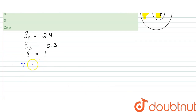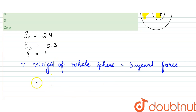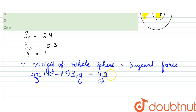Since the whole sphere is submerged, the weight of the whole sphere would be equal to the buoyant force. The weight can be written as: (4/3)π(R³ - r³) × ρ_concrete × g, minus the weight of the cavity (4/3)π r³ × ρ_sawdust × g, equals the buoyant force (4/3)π R³ × ρ_water × g.